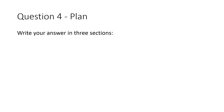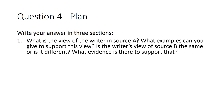You can write your answer in three sections. I've tried to think of an easy plan for any question. Number one: what is the view of the writer in Source A? What examples can you give to support this view? Is the writer's view in Source B the same or different? What evidence is there to support that? That should be your first paragraph. In it, you're not putting in any methods whatsoever — you're simply writing the viewpoint. Your comparative words will come in the second part of that paragraph, and you're already hitting the assessment objective by comparing and focusing on viewpoints and perspectives.